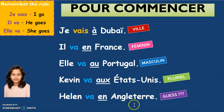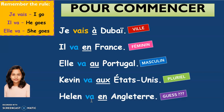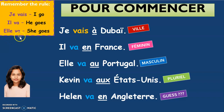Helen va en Angleterre — Helen goes to England. You can guess why we have 'en' in front of Angleterre — it's because Angleterre is a feminine word. Please remember this rule. Je vais means I go or I'm going. Il va means he goes or he is going. Elle va means she goes or she is going.